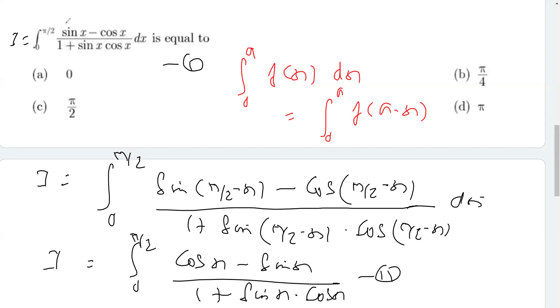If I add equation 1 and equation 2, we get 2I equals... these terms cancel, so we get 0 in the numerator. Zero divided by any number is 0, and the integration of 0 is 0. So I equals 0. This is the correct option.